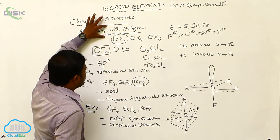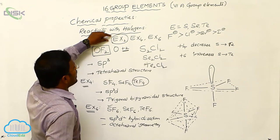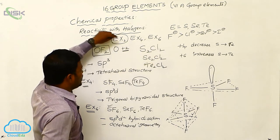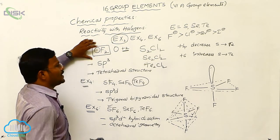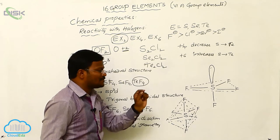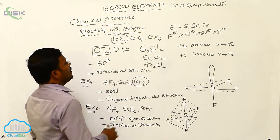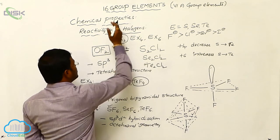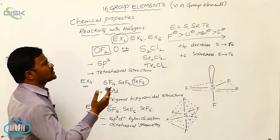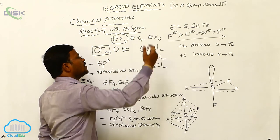In summary, by reacting with halogens, Group 16 elements can produce three different types of halides with general molecular formulas EX2, EX4, and EX6. In EX2, only one oxygen compound is available by reacting with fluorine — oxygen difluoride — in which oxygen exhibits a +2 oxidation state, but generally oxygen shows a -2 oxidation state. The stability order of halides is: fluorides > chlorides > bromides > iodides.